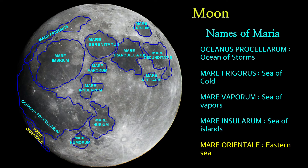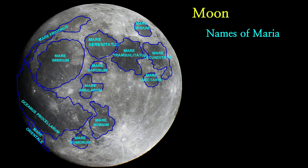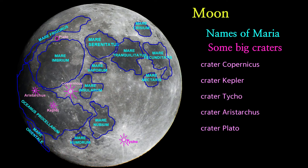So far we have looked at the lunar mares on the Moon. Now let's look at the craters. Of course, there are lots of craters on the Moon — let's look at the big ones. Here is crater Copernicus. It was named after the astronomer Nicolaus Copernicus, who pioneered the heliocentric model of our solar system. Copernicus is one of the most noticeable craters on the Moon, located in eastern Oceanus Procellarum.